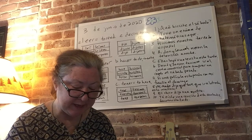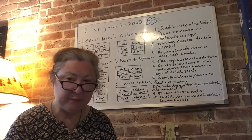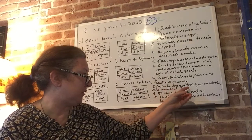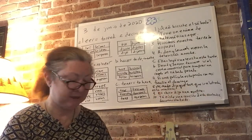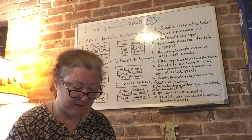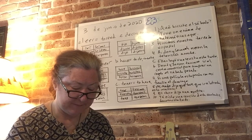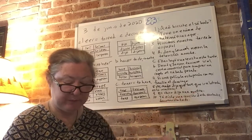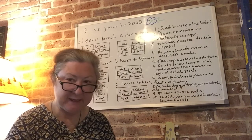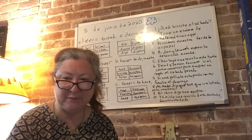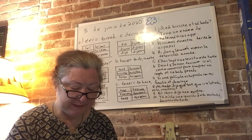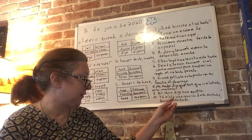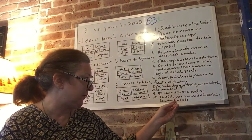Number six: David and Jensen had to go to the mall to buy a gift last Saturday. The answer is: David y Jensen tuvieron que ir al centro comercial para comprar un regalo el sábado pasado. Number seven: I saw a great movie with my family on Sunday — vi una película estupenda con mi familia el domingo. Number eight: My mother said that I had to go to the store this morning — mi madre dijo que tuve que ir a la tienda esta mañana.